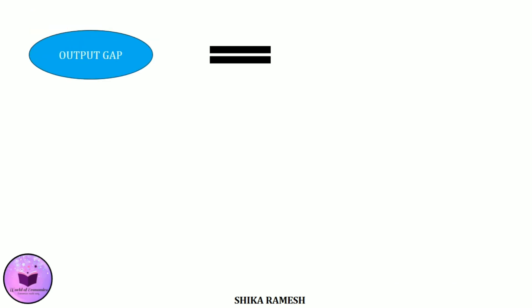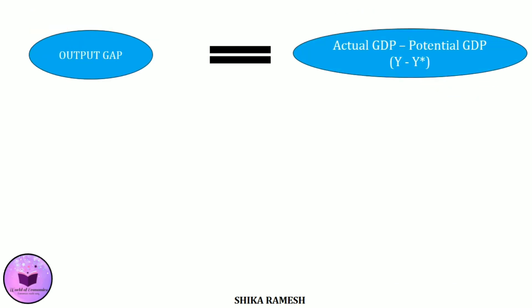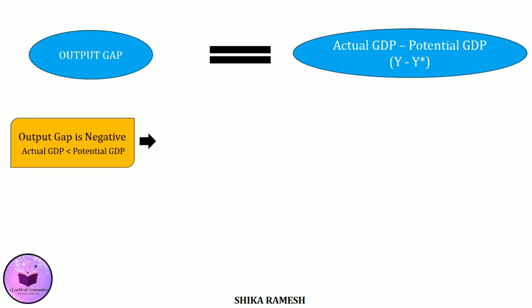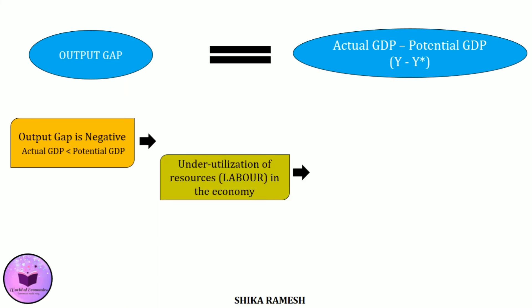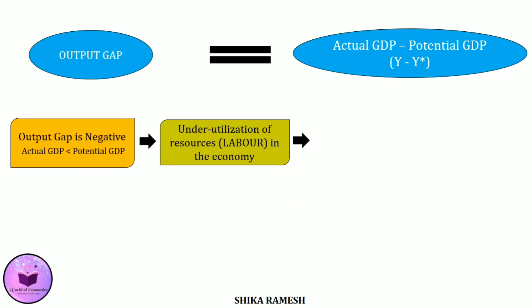As mentioned earlier, the output gap is nothing but the difference between actual GDP and potential GDP — that is, Y minus Y-star. Now, when the output gap is negative, that is, if actual GDP is less than the potential GDP, then it can be understood that there is underutilization of resources in the economy, especially labor. Since labor is underutilized, it means that more laborers are unemployed — so high unemployment is prevalent in the economy.